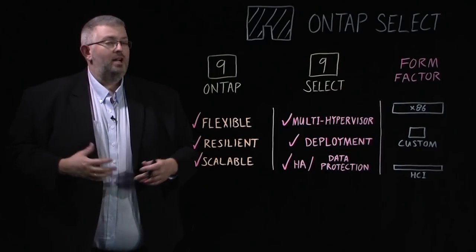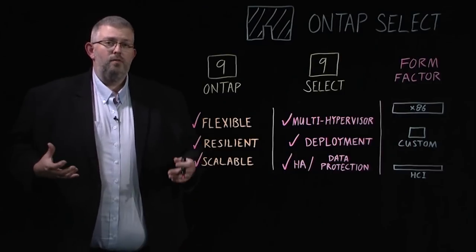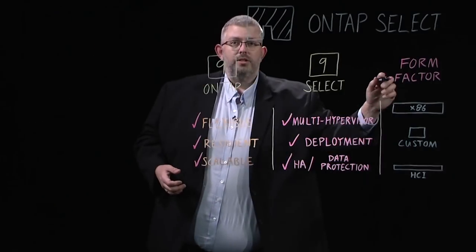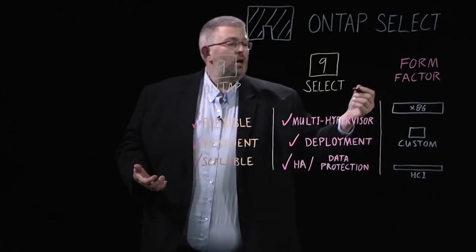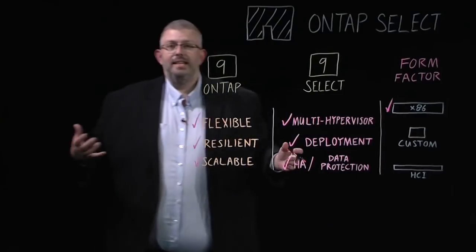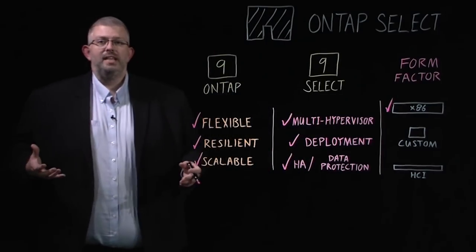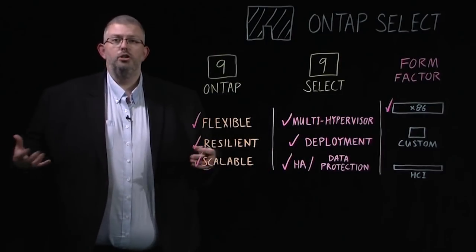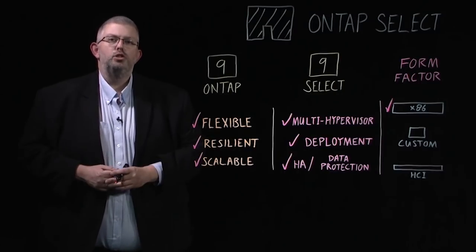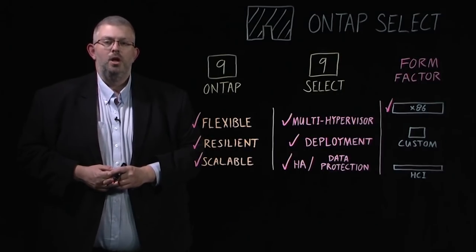ONTAP Select gives you the freedom, because it's software, to choose your form factor. So you can choose to run on an x86 server of your choice. A lot of businesses have a choice of one or two vendors that they use for all their servers — extend that and run your storage on top of that with ONTAP Select.